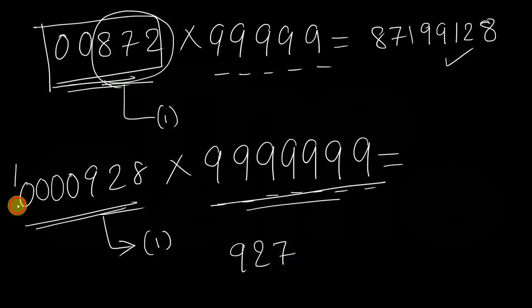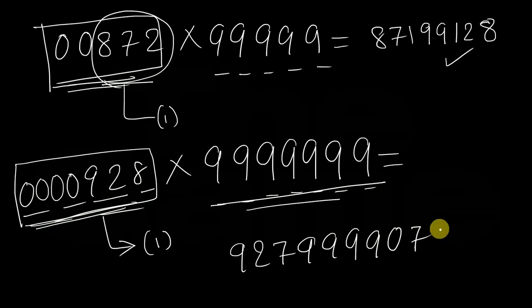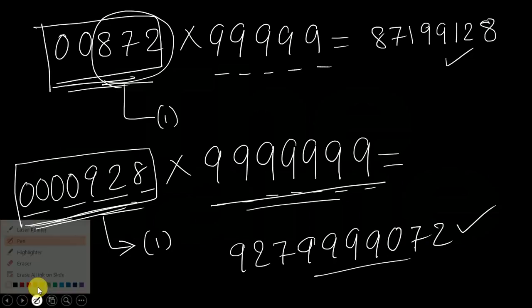After that, I have to write the complement of this number 0000928. What will be the complement of this number? 9999072. That's all. I hope that you are now clear with this technique.